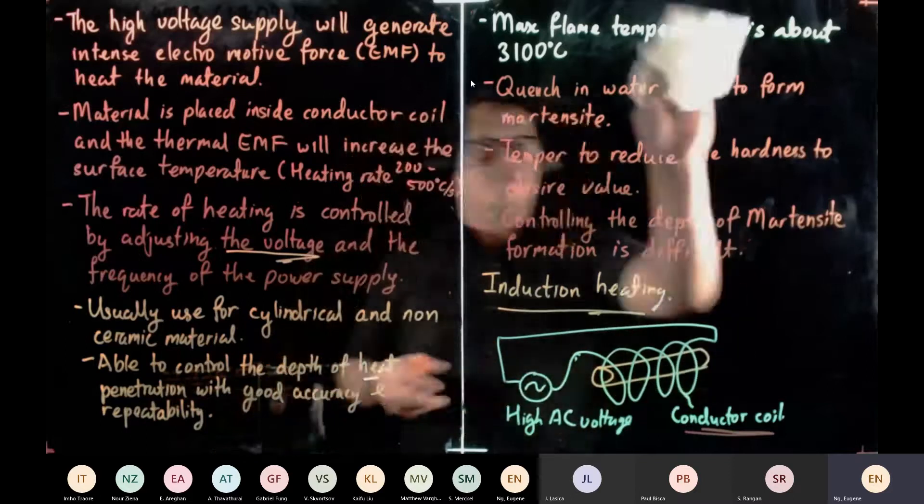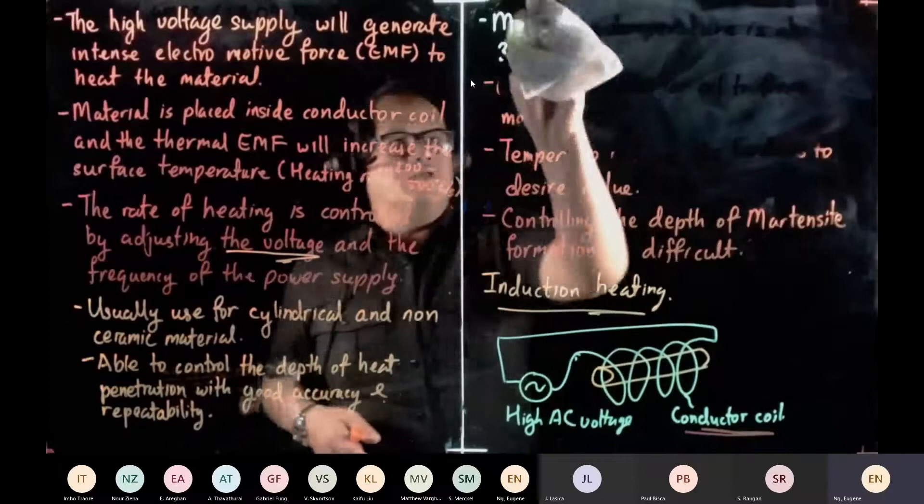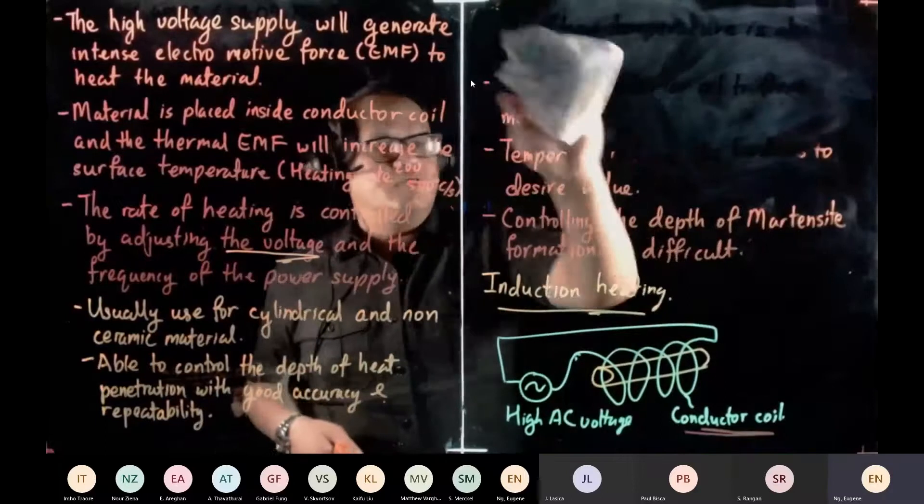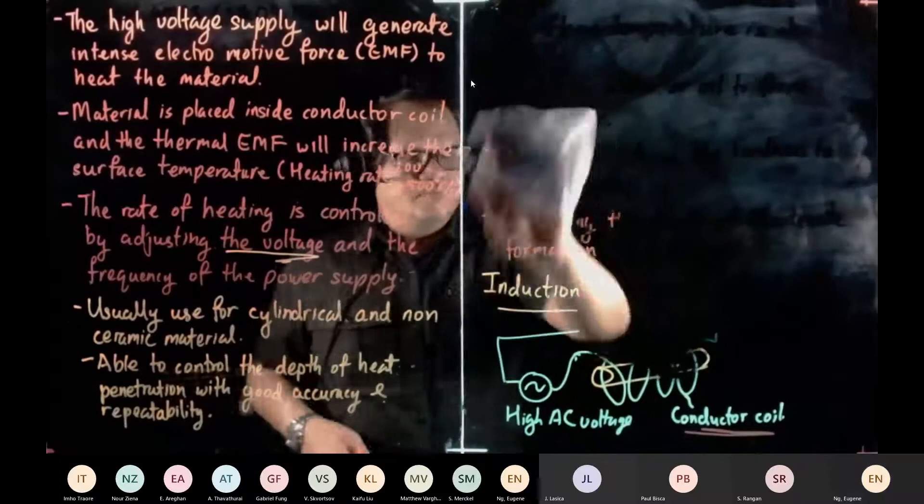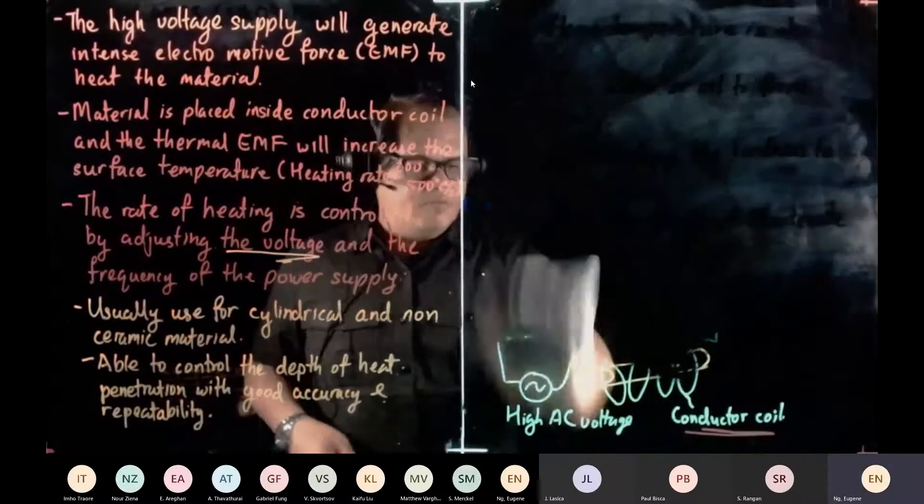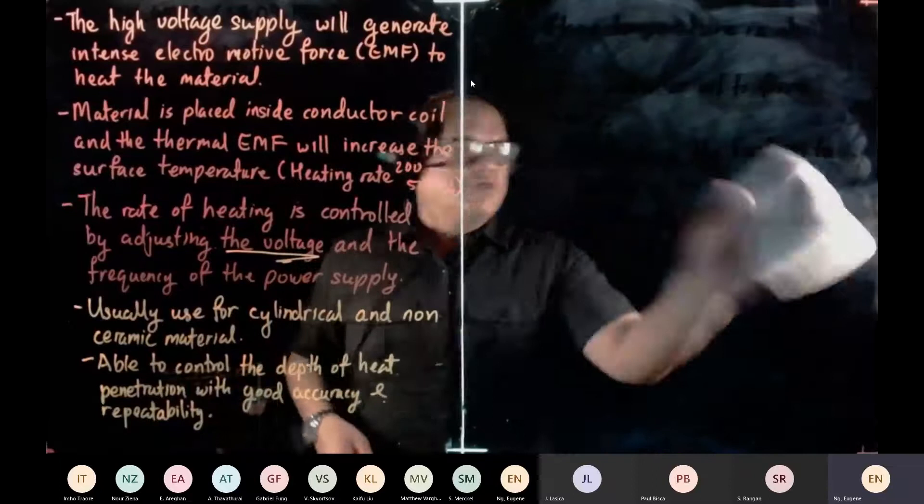So the next one is also a surface handling technique. It's to alter the surface chemistry. So we're going to change the surface chemistry, and you'll see the advantage of doing this, altering surface chemistry.